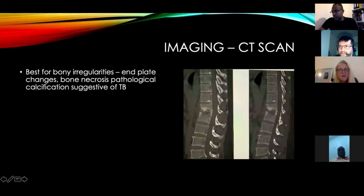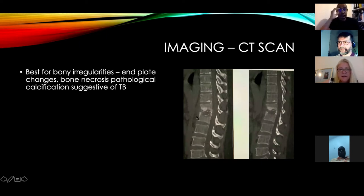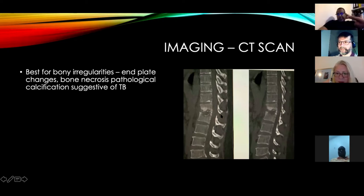CT scan is useful if the patient cannot have an MRI. It shows bony changes very well — in this case, destruction of the inferior and superior end plates with sclerosis, and the defect in the vertebra. Soft tissue swellings are sometimes visible on CT.